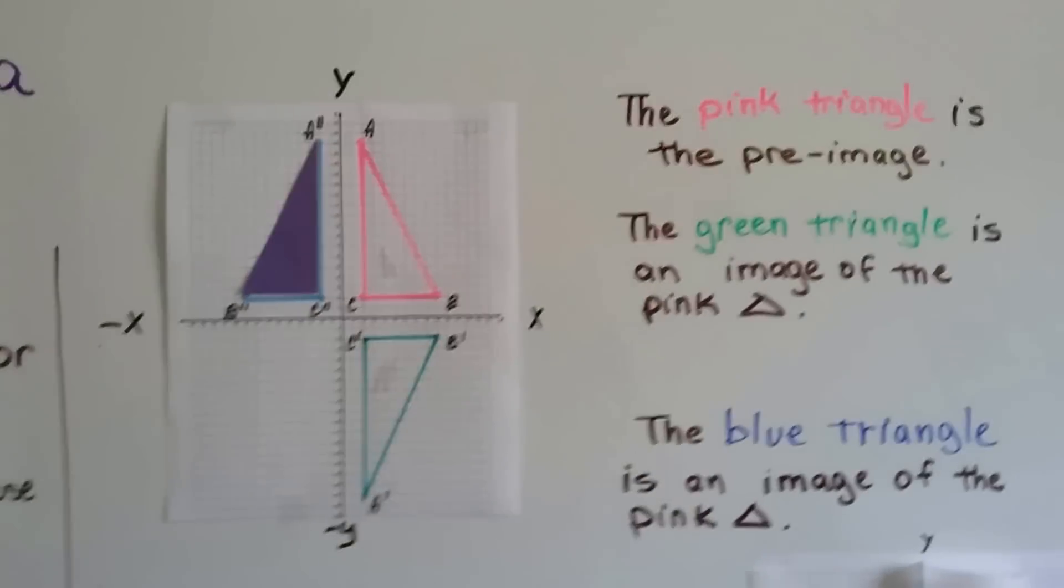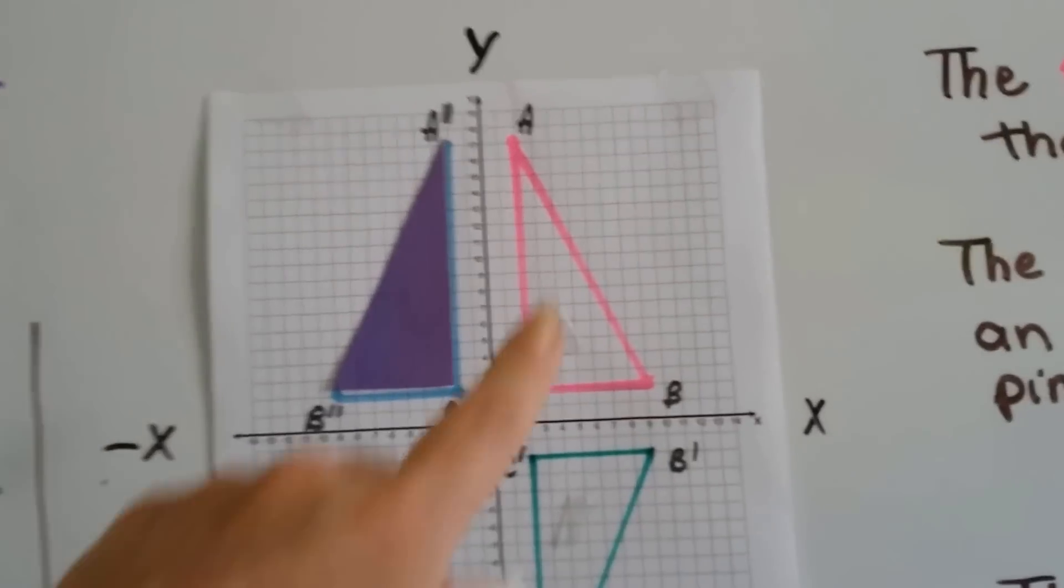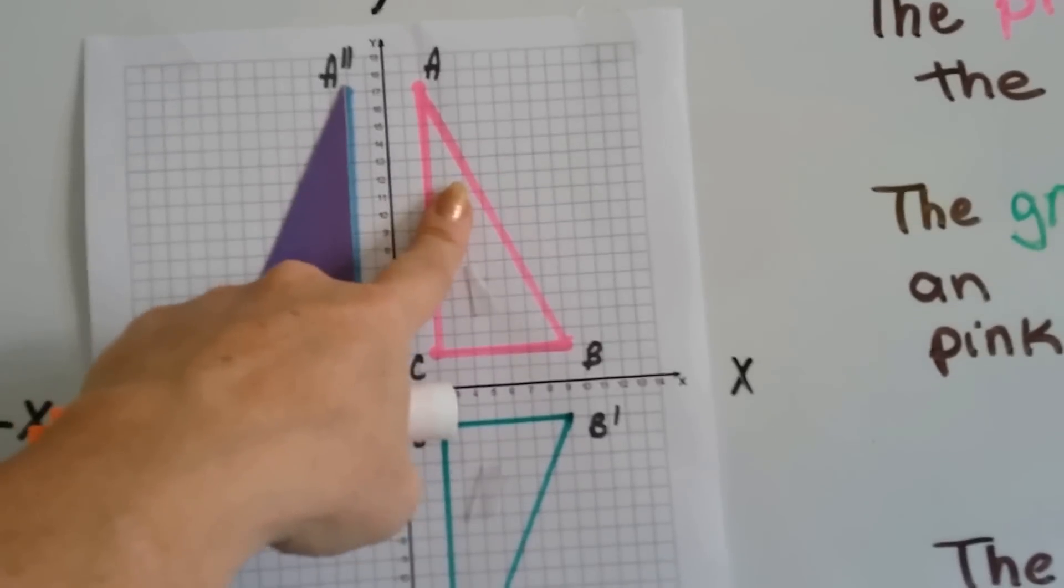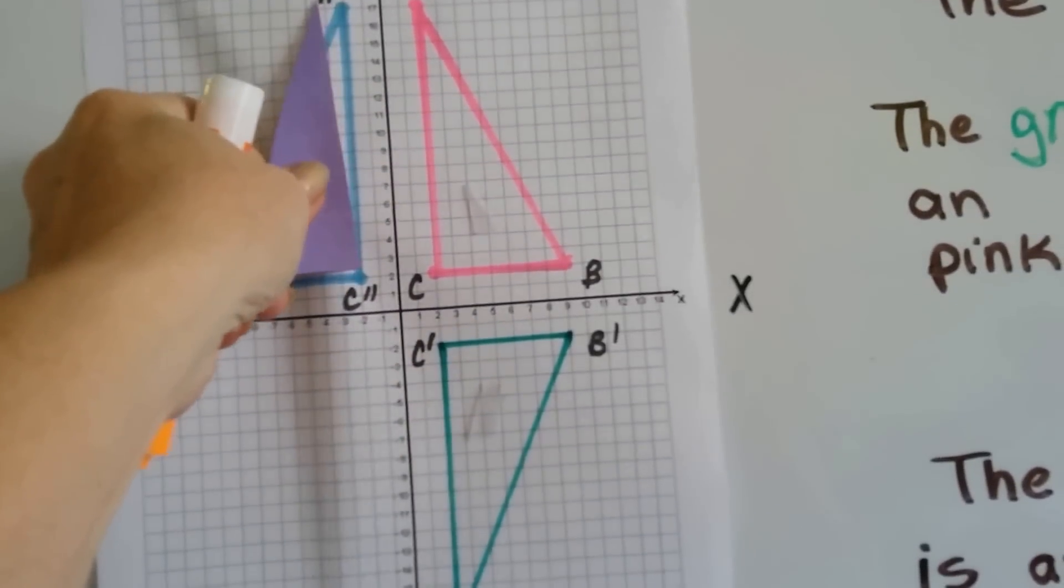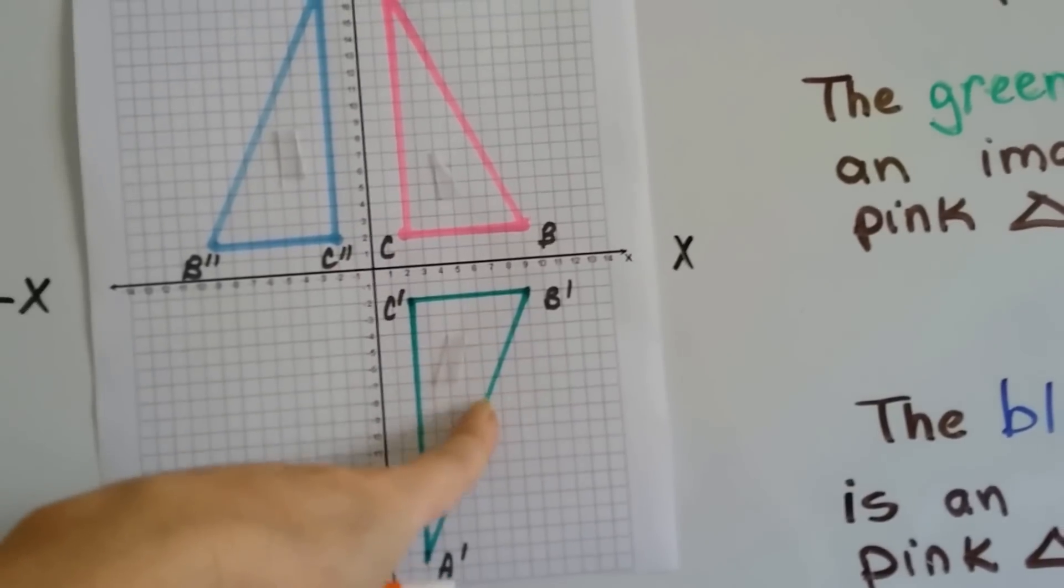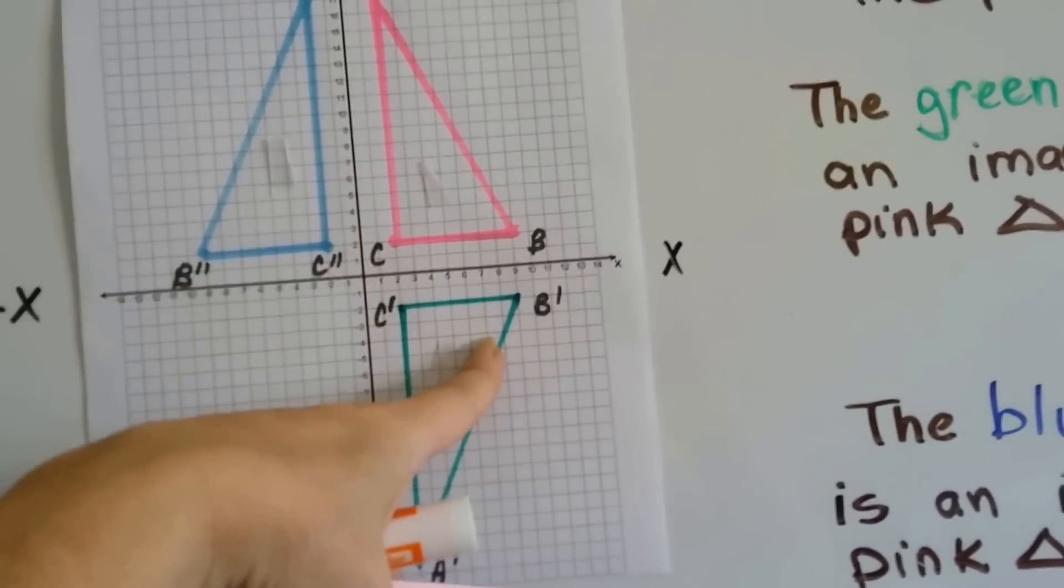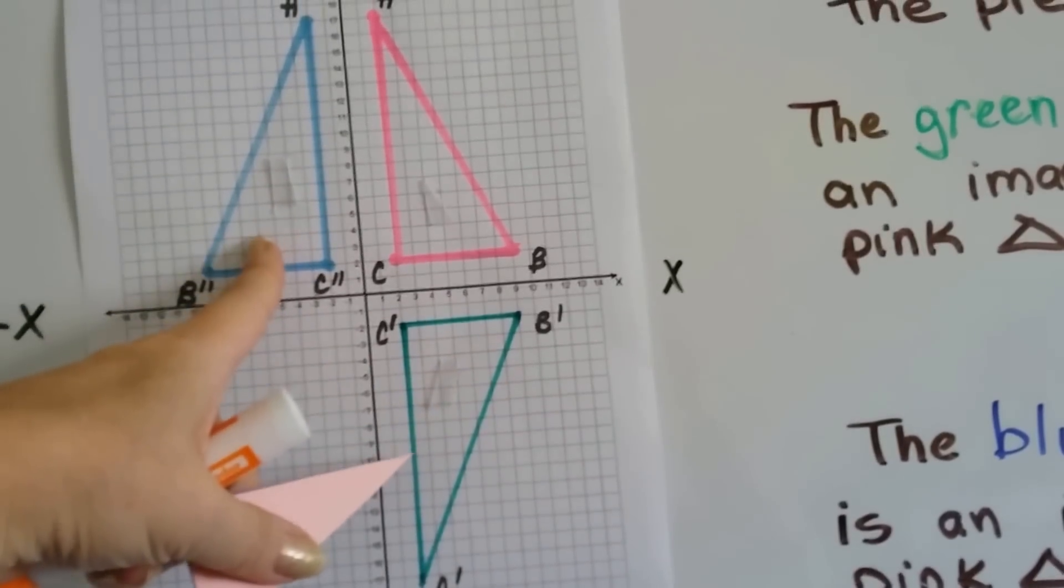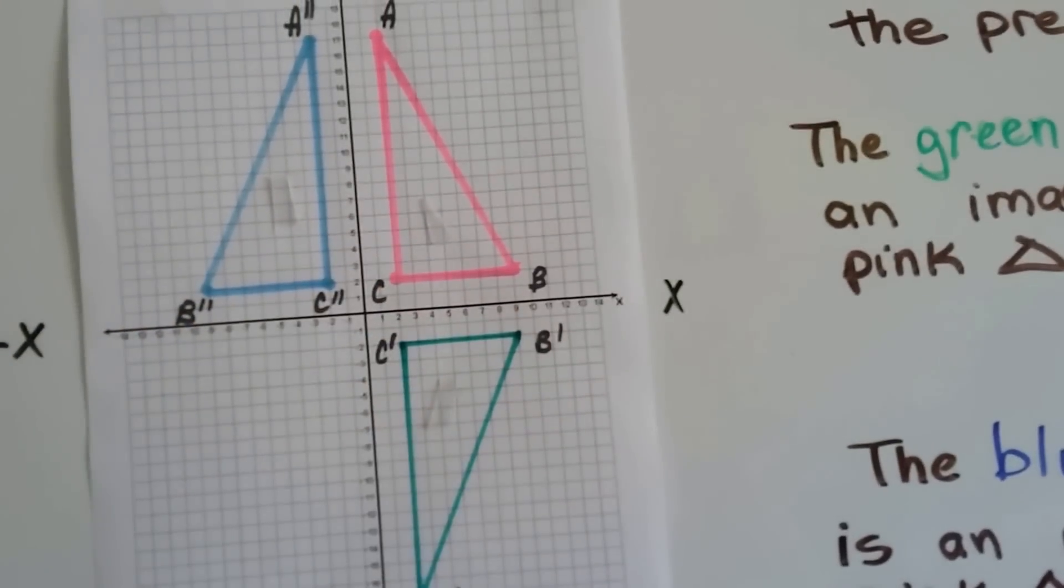Here we've got a graph and this is the pre-image, the original. And this is a reflection, it's an image of this one. And this blue one is also an image of the pink one.